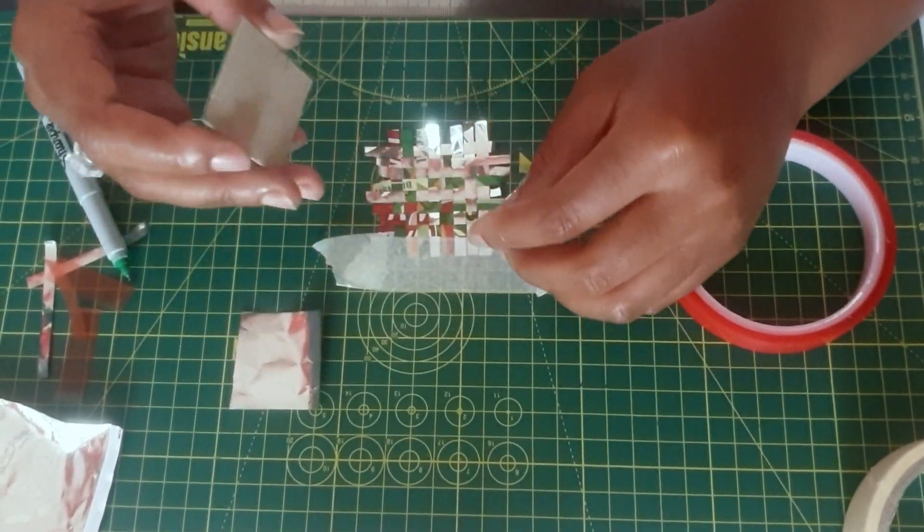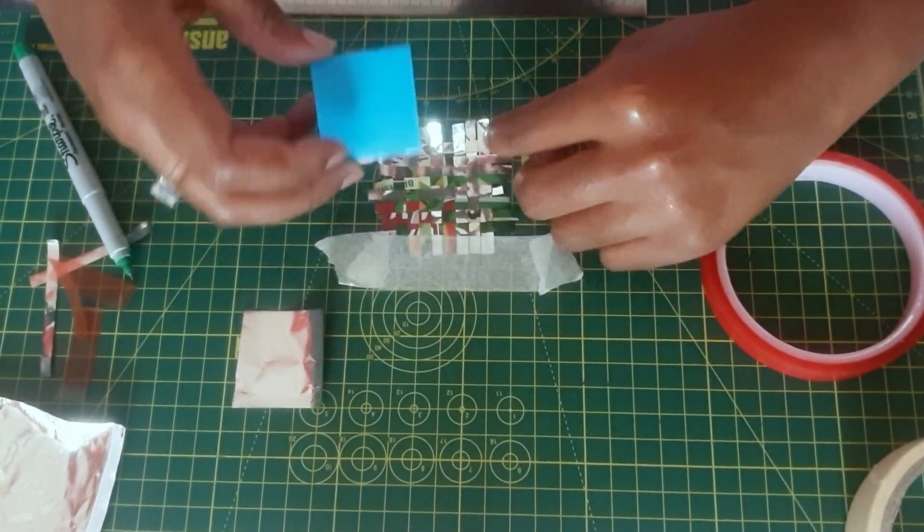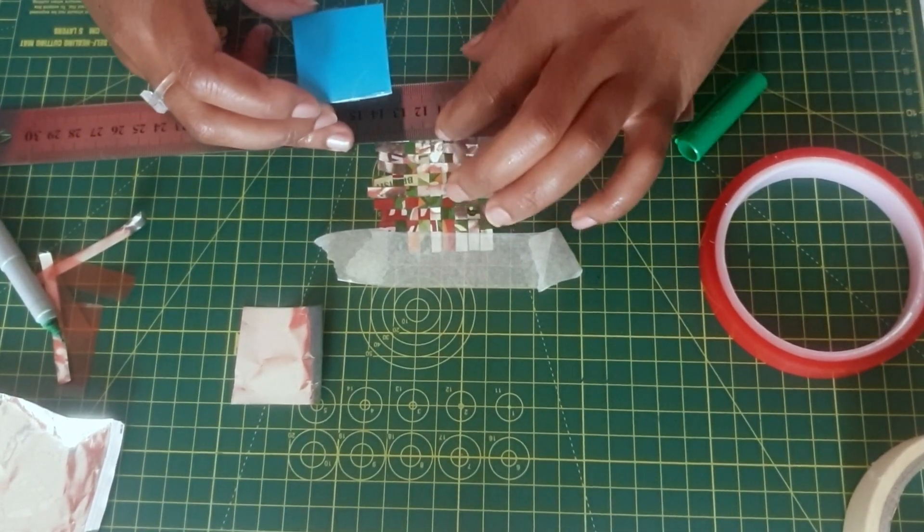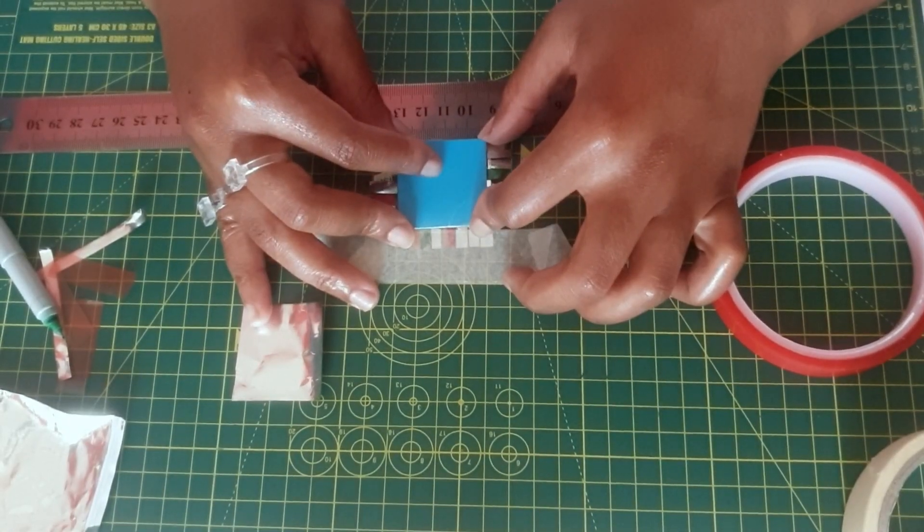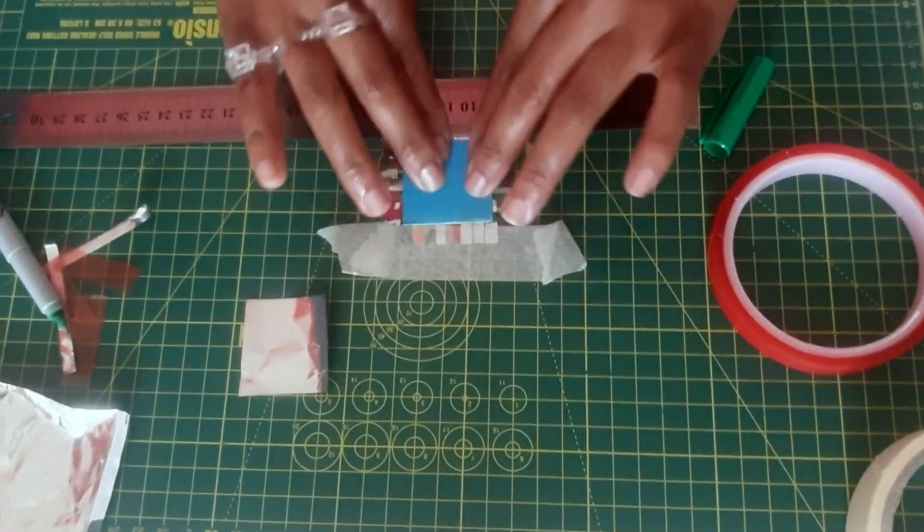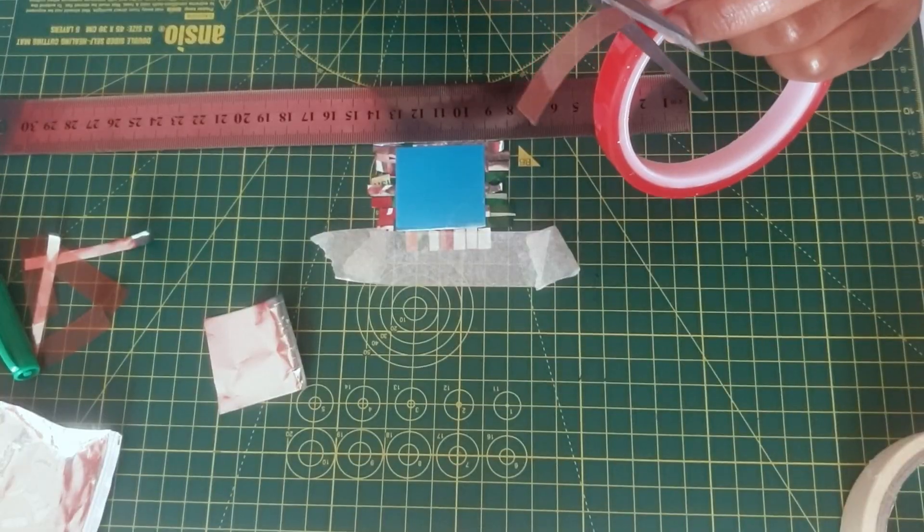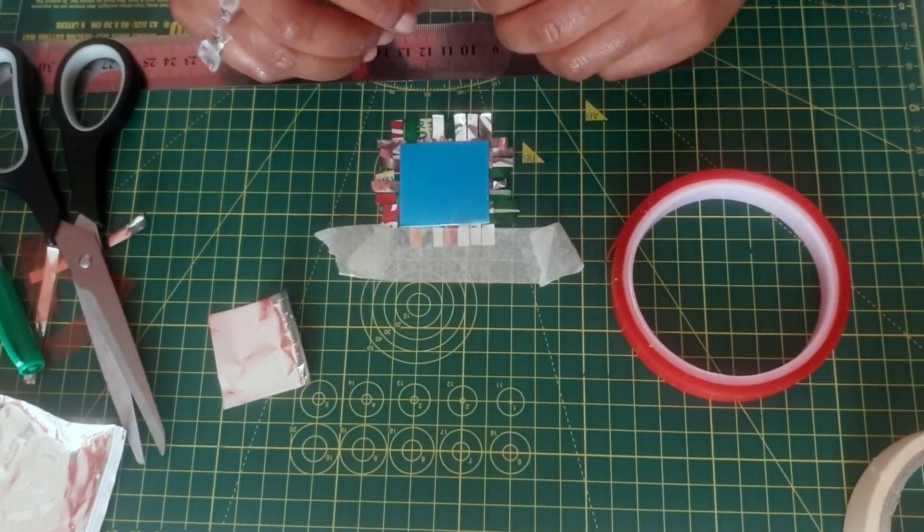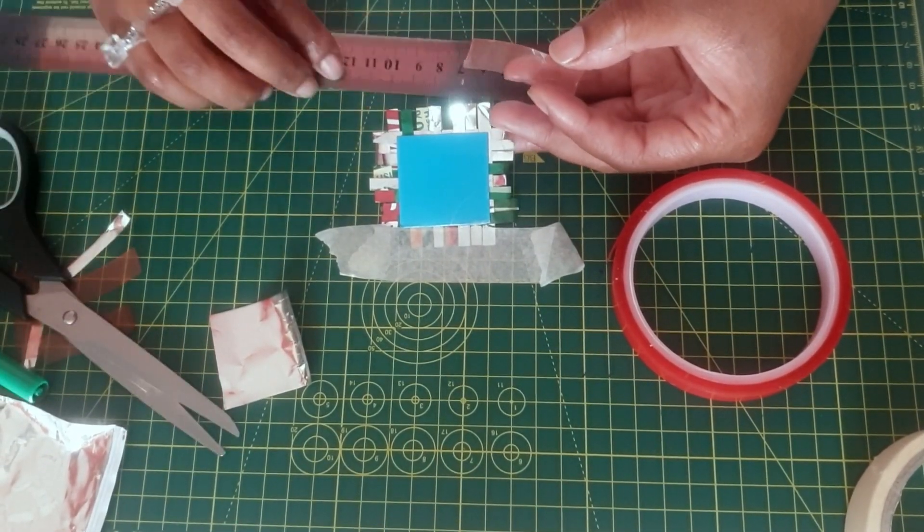Now you have that, you can go back to peeling the sticky back plastic off of your square and you can place that down onto the back of your woven pattern. Now the next bit can be a little bit fiddly but again use the ruler to help you keep everything in place.